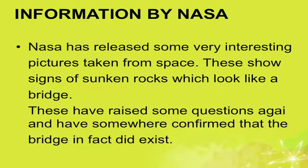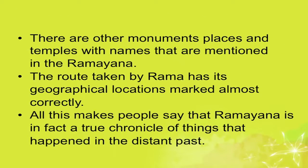Here is some interesting information: NASA has released pictures taken from space that show signs of sunken rocks which look like a bridge. These have raised questions and somewhere confirmed that the bridge in fact did exist. There are other monuments, places, and temples with names mentioned in the Ramayana, and the route taken by Ram has its geographical locations marked almost correctly — all of which makes people say that the Ramayana is in fact a true chronicle of events from the distant past.